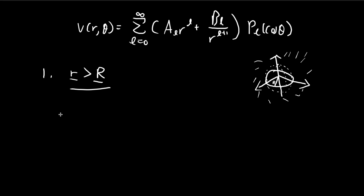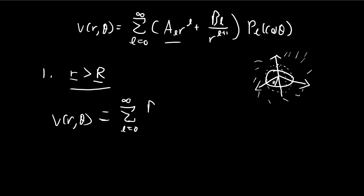When small r goes all the way to infinity, the potential must equal zero. This means the A terms must all be equal to zero — that's our first simplification. So our potential now has to look like the simplified form with only the B terms.